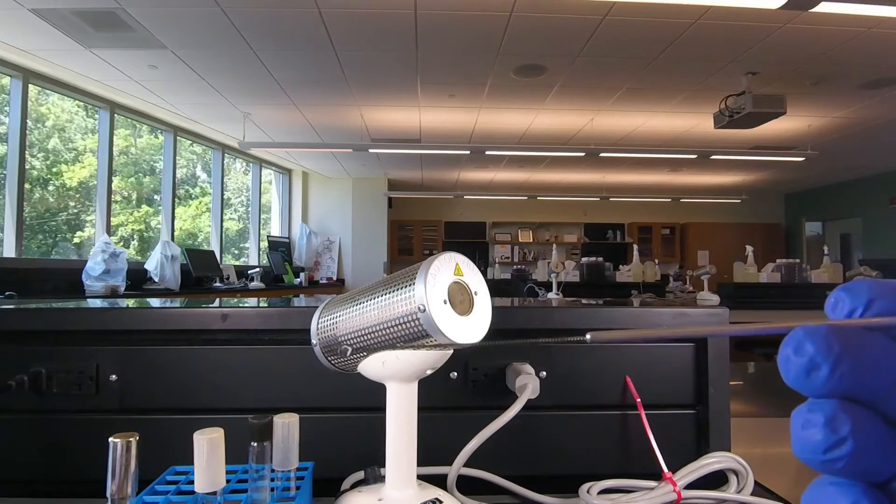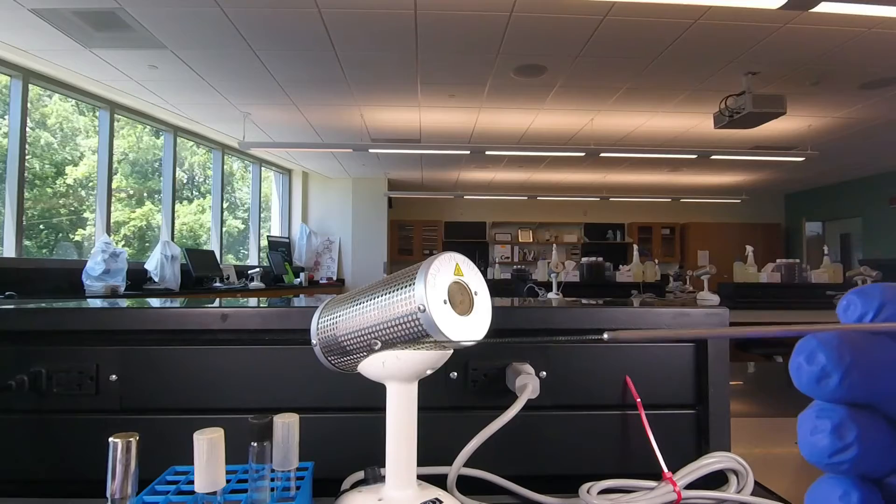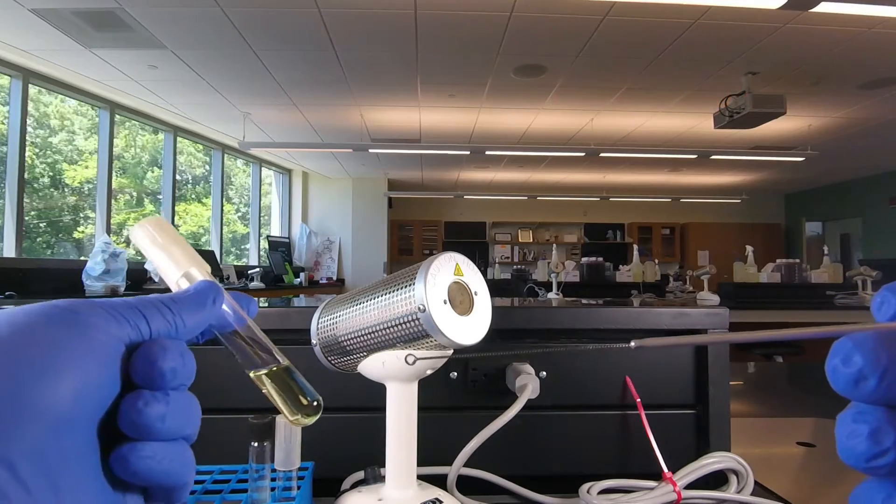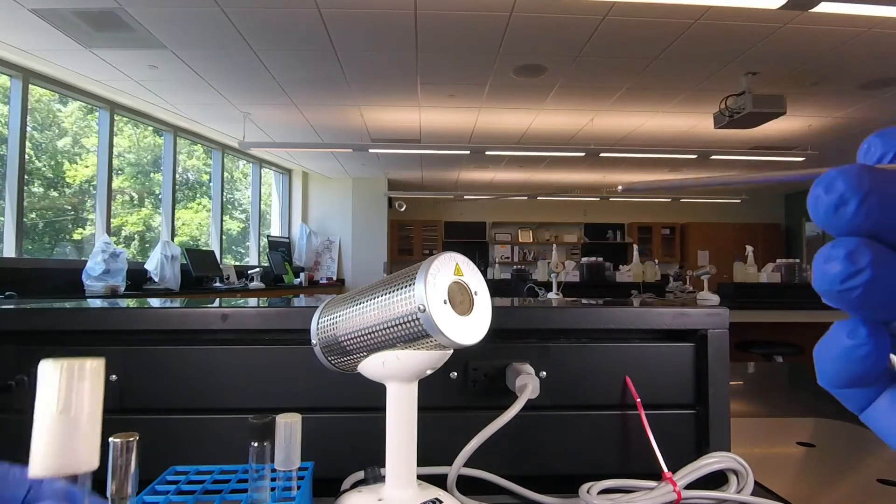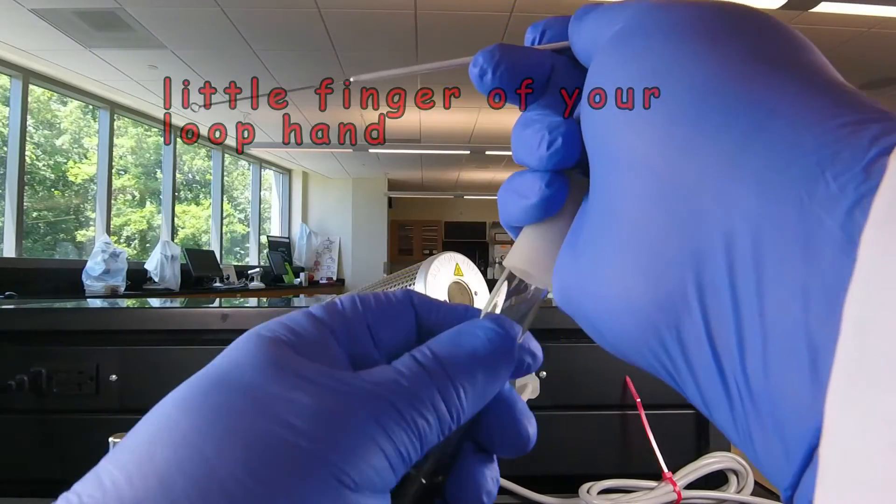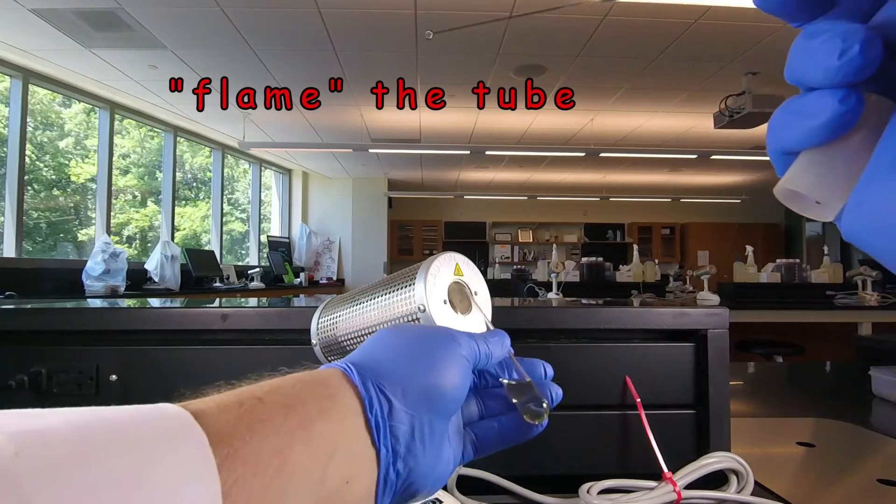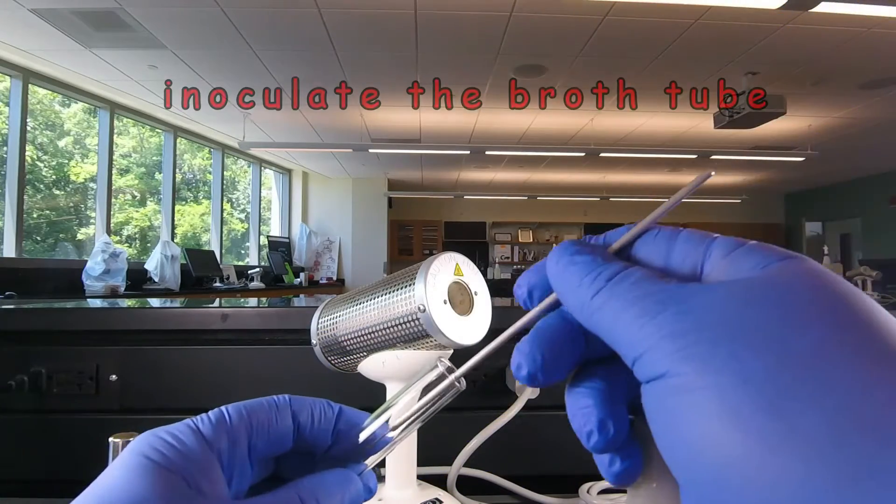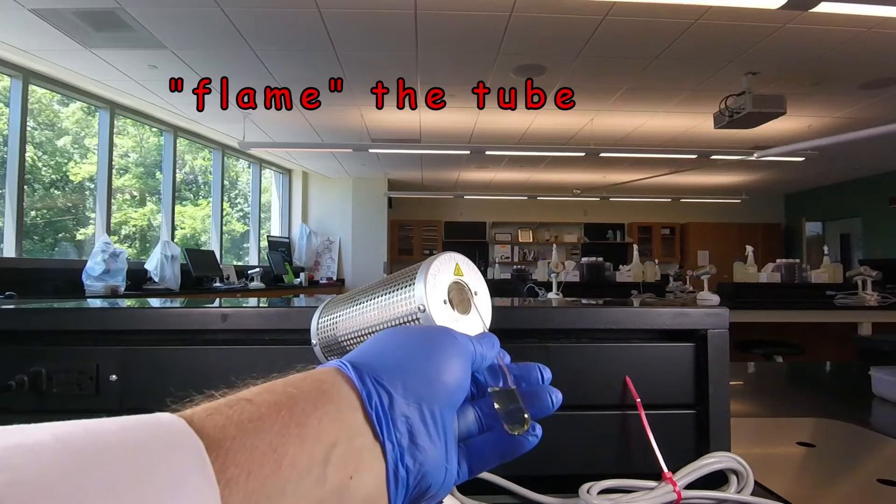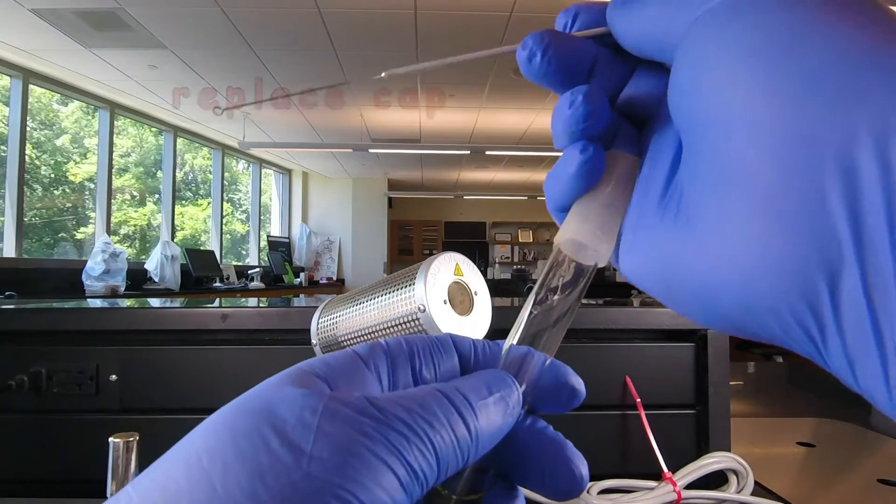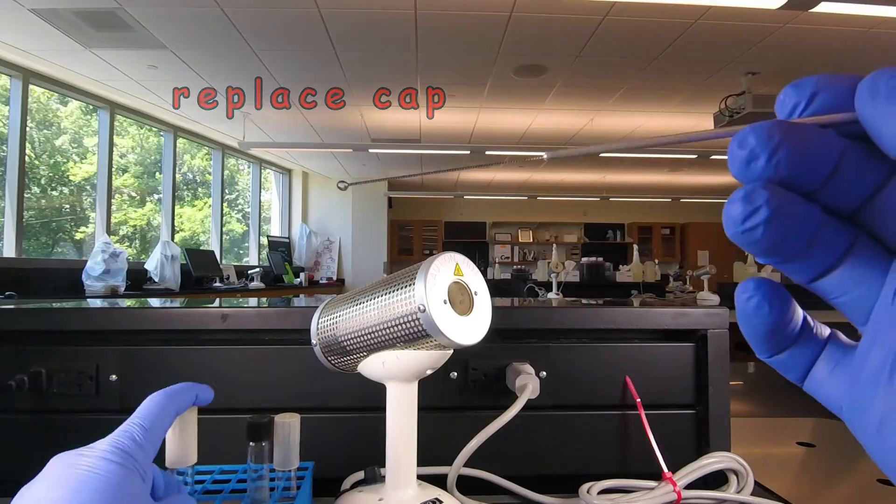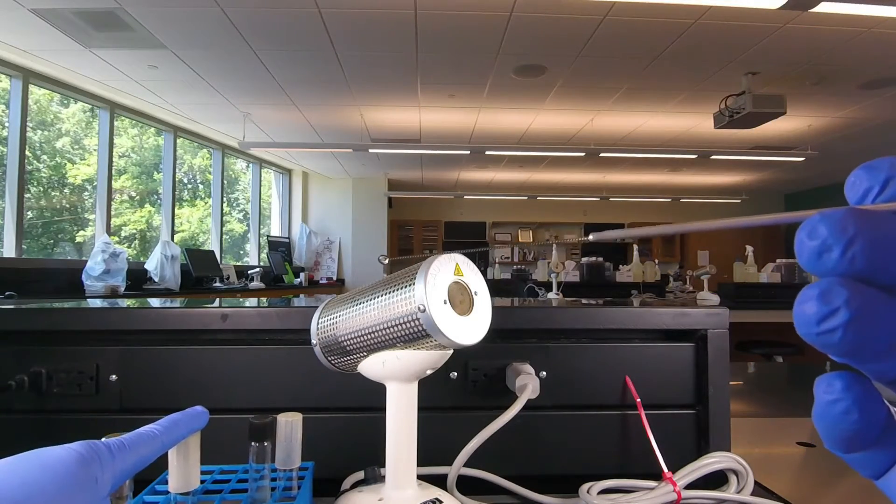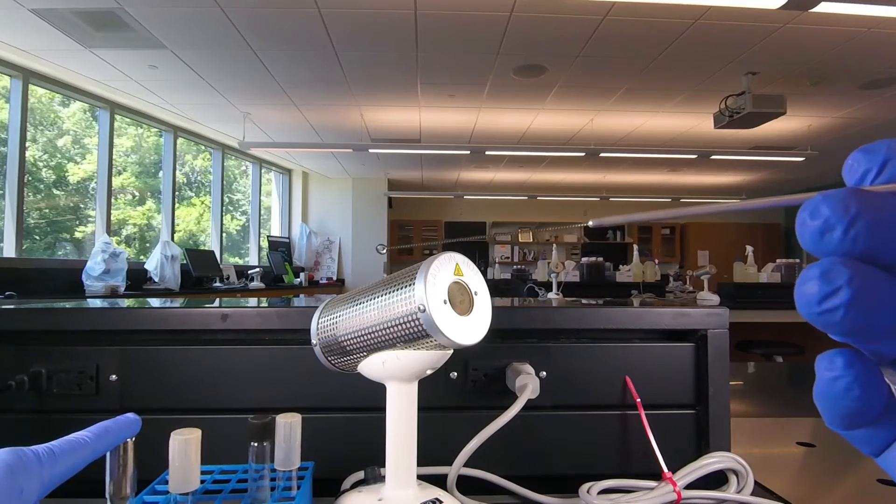And now we have the E. coli on our inoculating loop. Now we're going to grow it in this tube of tryptocase soy broth. So this is our sterile medium that we want to grow our E. coli in. We remove the cap of the sterile medium, flame it for three seconds, put in the E. coli, flame it for three seconds, put the cap back on. And now the only thing growing in this tube should be the E. coli. No outside contaminants, no contaminants got in our pure culture.